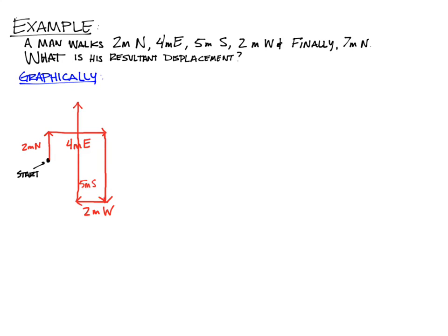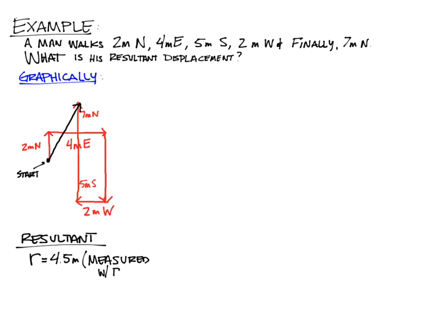To find our resultant graphically, we start at the very beginning point and end at the very last position. Using a ruler, our resultant comes out to be about 4.5 meters according to this scale. Graphically, you measure distance with a ruler. We also use a protractor to measure the angle, which comes out to about 63 degrees. We'll talk about these angles in more detail, but graphically we use a protractor.